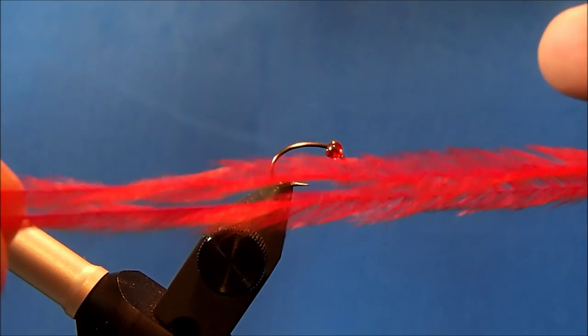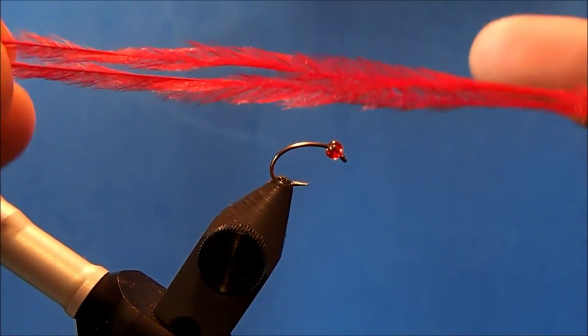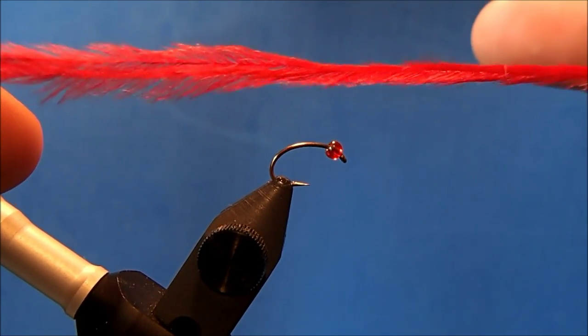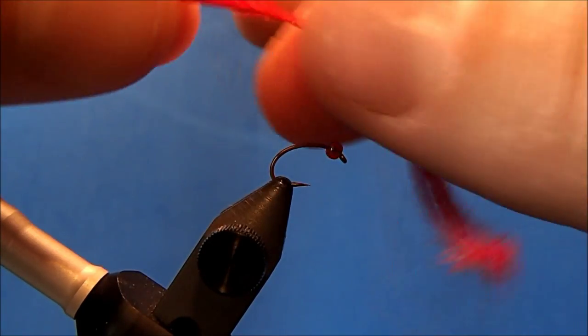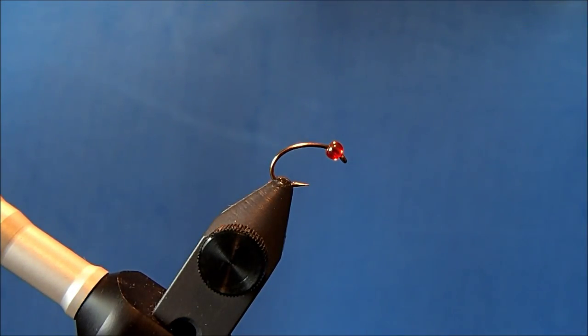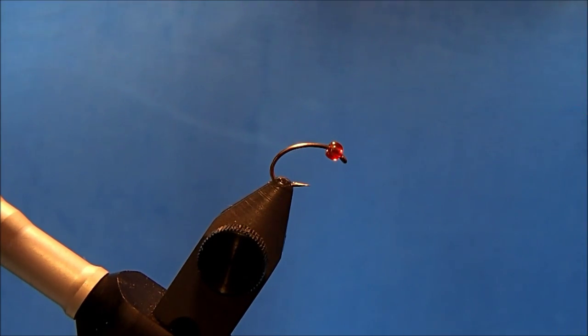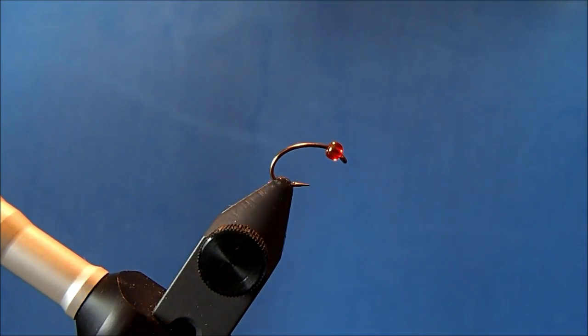I'm going to use ostrich hurl in this case, with pieces in both red and black. When you strip this down with a pencil eraser, you get nice pieces of body material that you can use in a variety of applications. That's what I'll be using for the body of this fly.